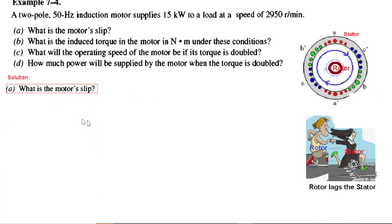The first one is: what is the motor slip? I have already discussed in my previous videos what slip is — I will just give a brief here. This is the stator and this is the stator magnetic field. The stator magnetic field is fixed depending on the number of poles and the frequency. But the rotor in an induction motor does not have any power supply; voltage is induced in it just like a transformer. Therefore its rotating magnetic field tries to catch the stator magnetic field but it lags — the rotor slips back.